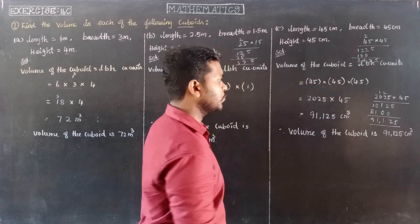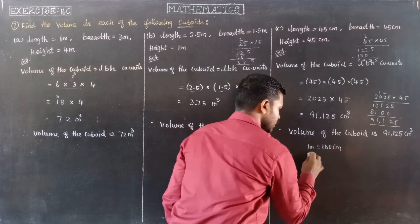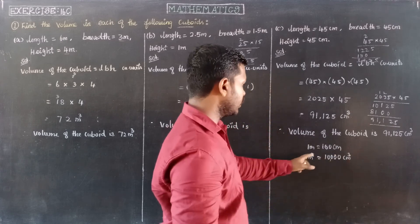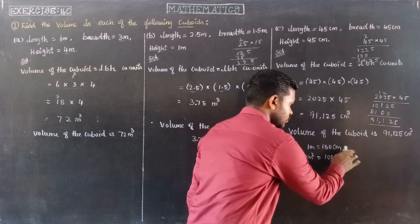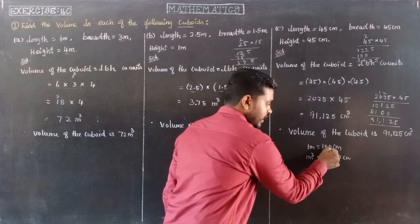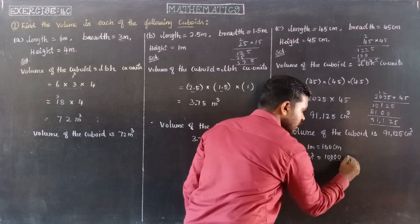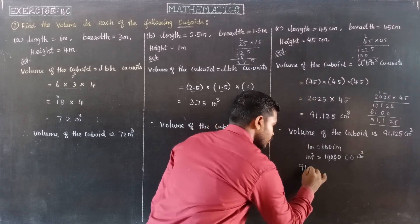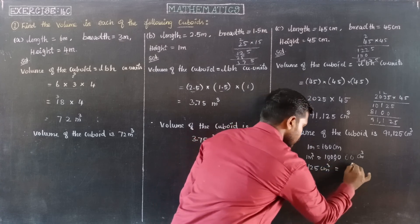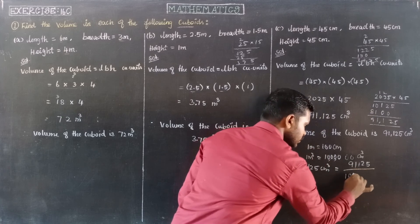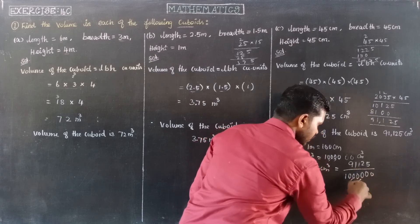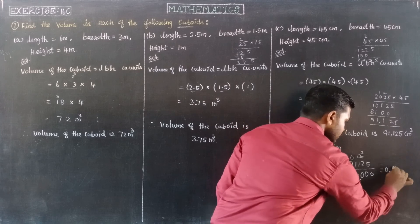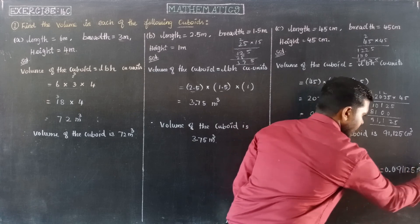So, we can convert the cm cube into meter cube. 1 meter is equal to 100 cm. So, 1 meter cube is equal to 1,000,000 cm cube. So, to convert, 91,125 cm cube divided by 1,000,000. So, 91,125 divided by 1,000,000 is 0.091125 meter cube. Both are same. Thank you.